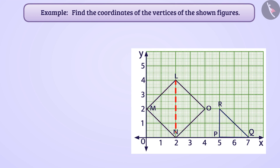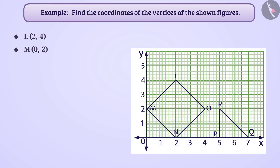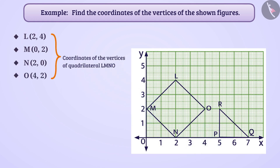The x-coordinate of vertex L is 2 and y-coordinate is 4, so the coordinates of vertex L are (2, 4). The x-coordinate of vertex M is 0 and y-coordinate is 2, so the coordinates of vertex M are (0, 2). The x-coordinate of vertex N is 2 and y-coordinate is 0, so the coordinates of vertex N are (2, 0). The coordinates of vertex O are (4, 2). Thus the vertices of quadrilateral LMNO have coordinates (2,4), (0,2), (2,0) and (4,2).